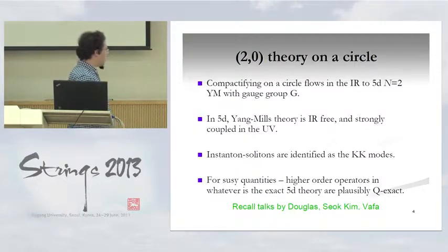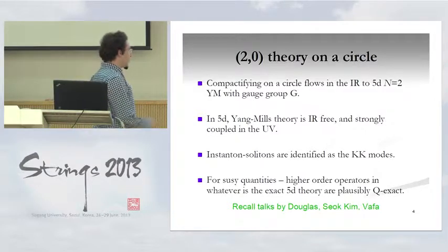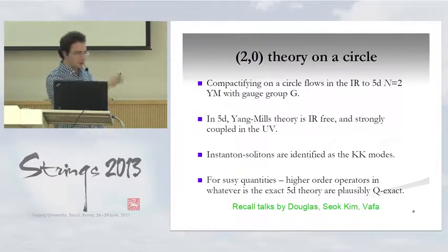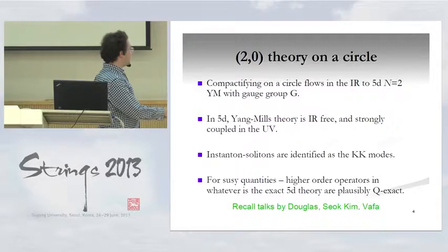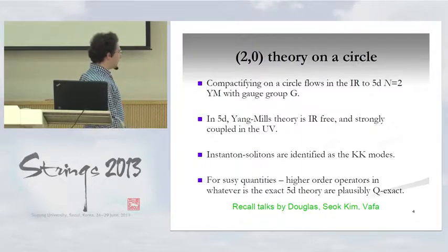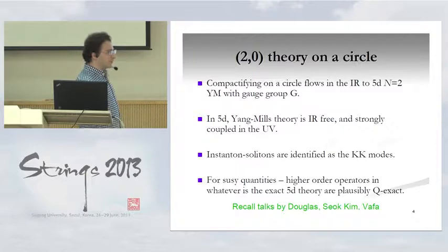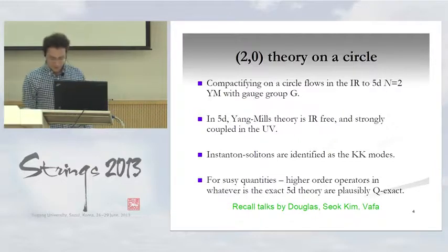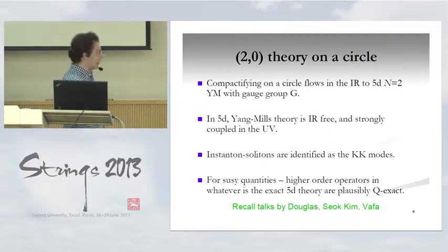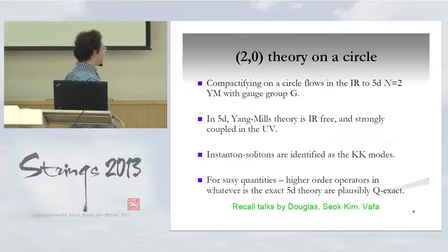That won't be relevant here because we're going to compute some supersymmetric quantity. The 2-0 theory on the circle is some theory in 5D — maybe it contains 5D Yang-Mills plus a whole series of higher order operators — but it might be that if you compute some supersymmetric partition function, the higher order operators may be Q-exact, at least if you have enough supersymmetry. This hasn't been analyzed in detail, but it's plausible. In the context of this work, the circle is going to be a small circle anyway, so it will be in the infrared-free regime where it's definitely 5D Yang-Mills.